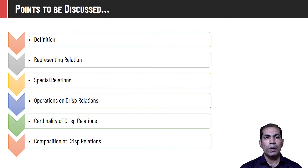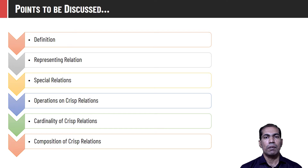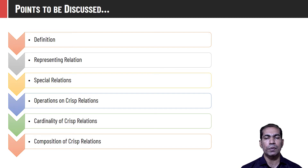In this video I am going to cover what crisp relations are, what are the different representations of crisp relations. We will talk about some spatial relations and that will be followed by different types of operations that we can perform on crisp relations. We will also talk about the cardinality of crisp relations and at the end the very important topic: compositions of crisp relations.